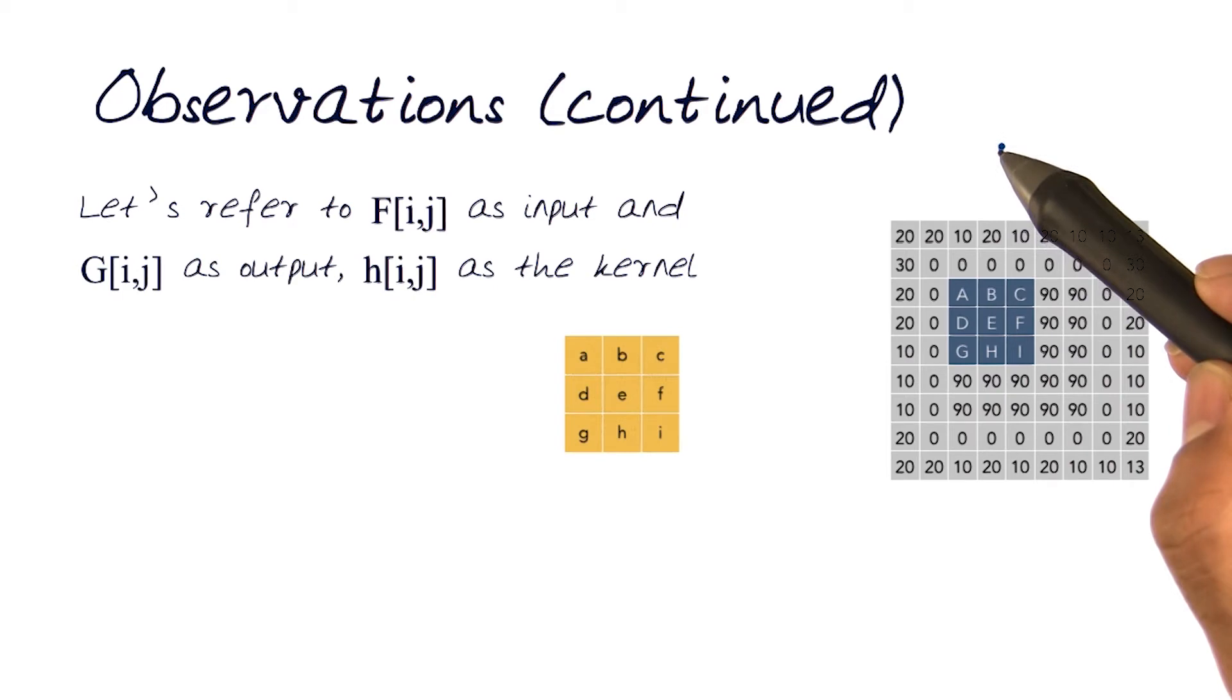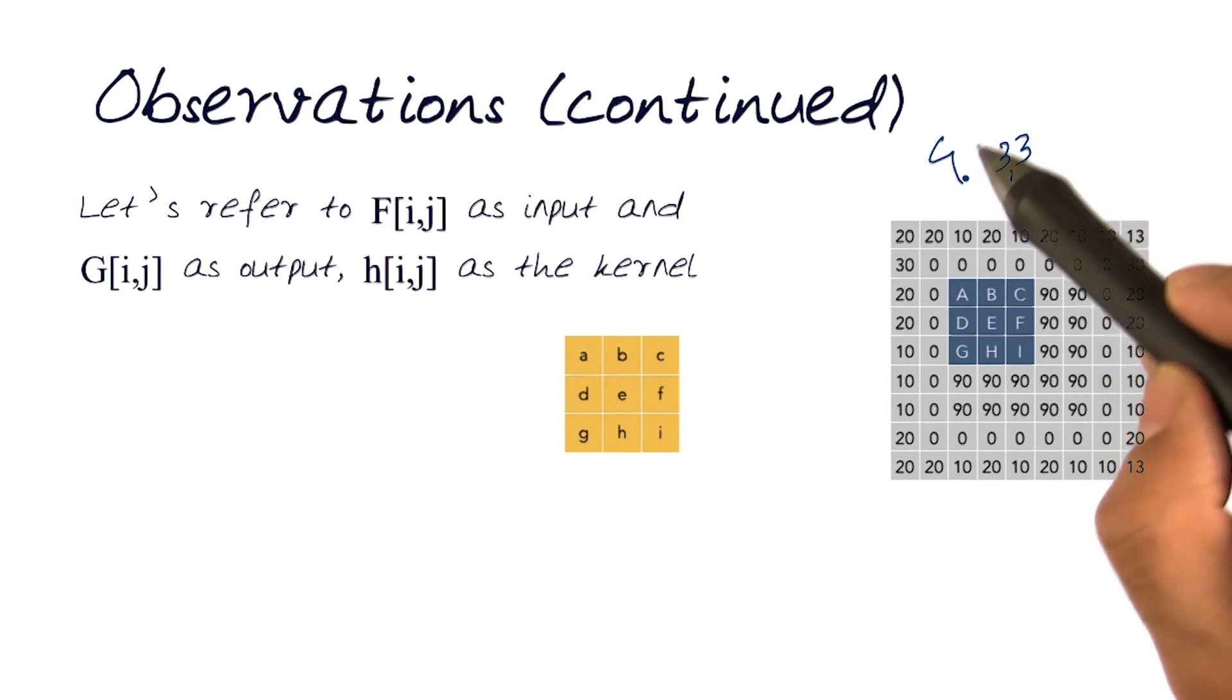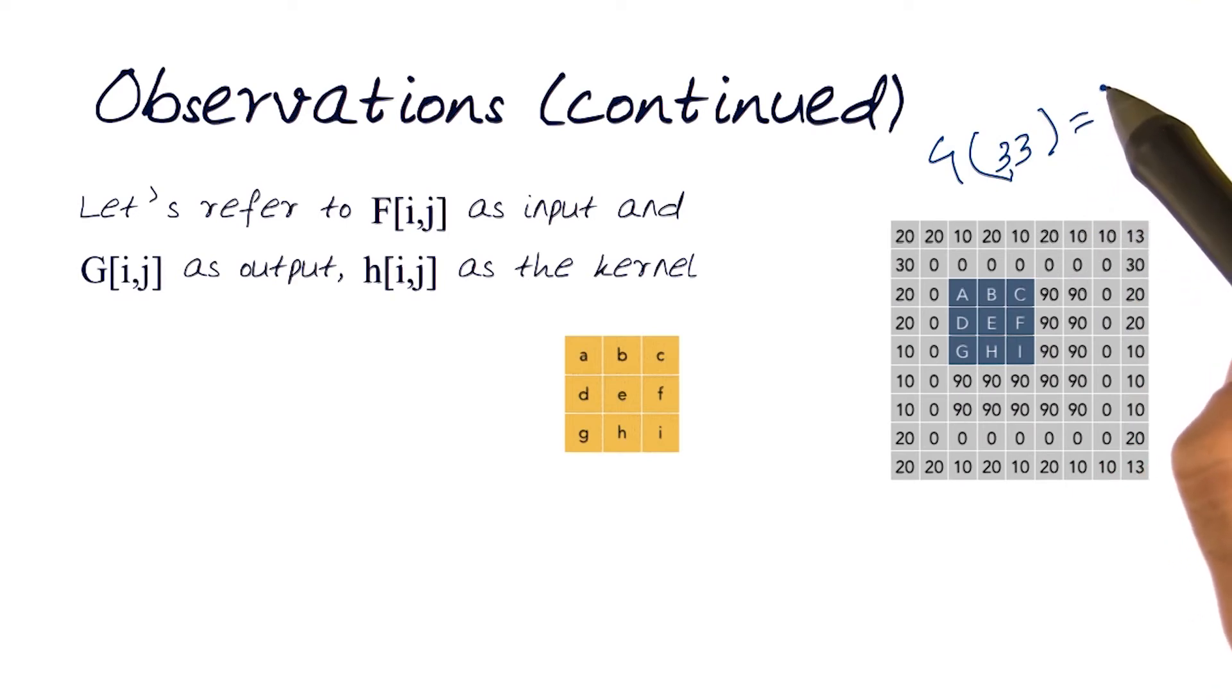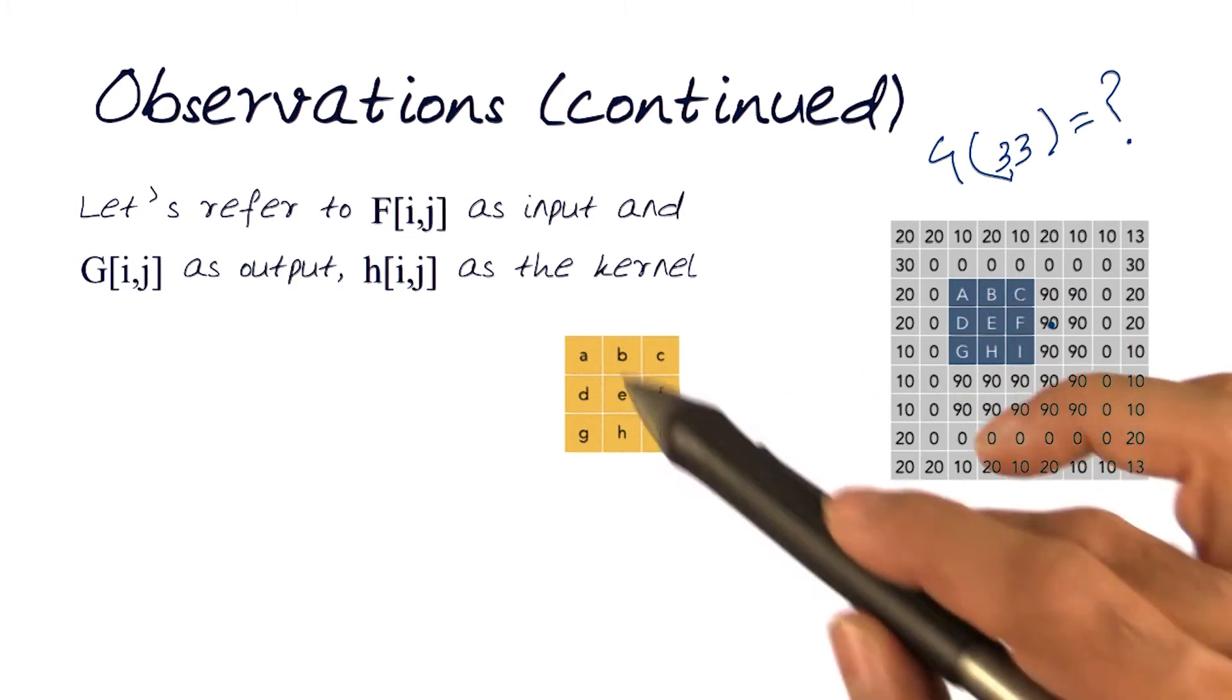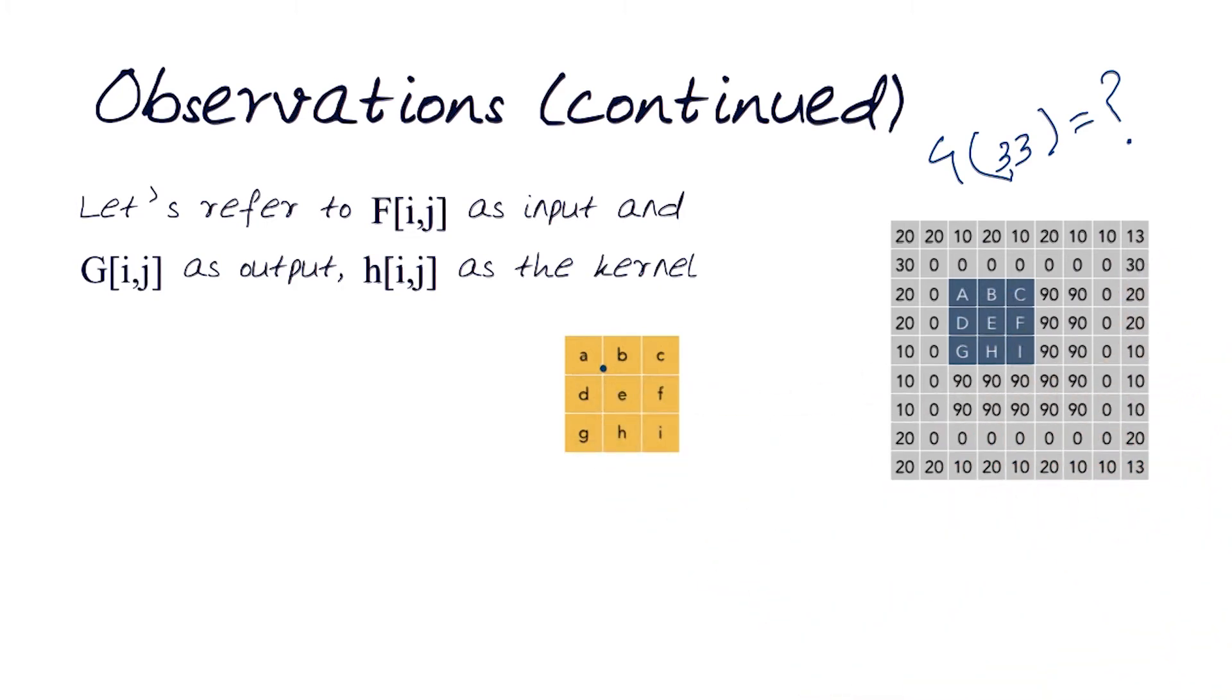So basically now, looking for the value of g, the output at 3, we want to figure out what is the math for coming up with this. And I've given it some variables: a, b, c, d, e, f, g, h, i, just to mirror the lowercase ones here.